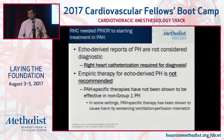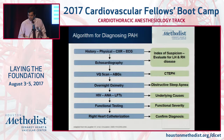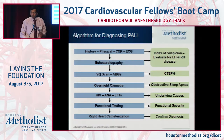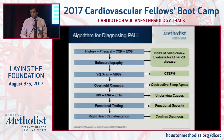Treating these patients based on echo is not recommended because you don't have an appropriate diagnosis. You get a VQ scan to look for chronic thromboembolic PH, along with serologies for HIV and other rheumatologic illnesses, and finally do a right heart catheterization to confirm diagnosis.